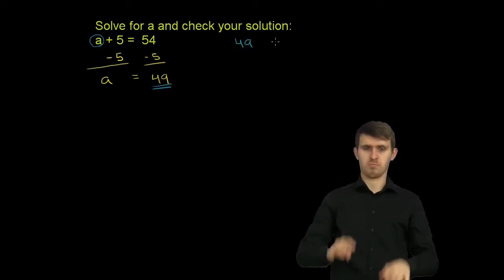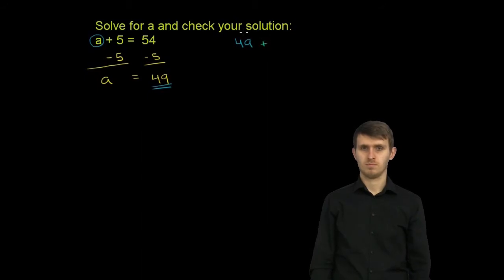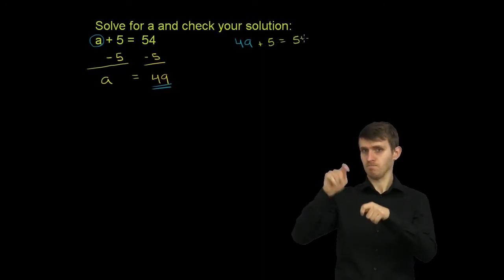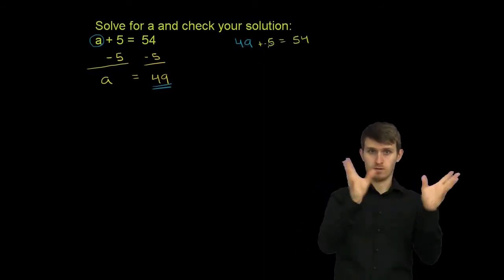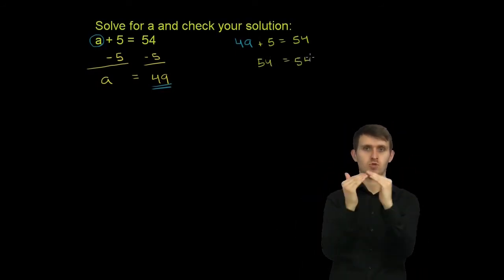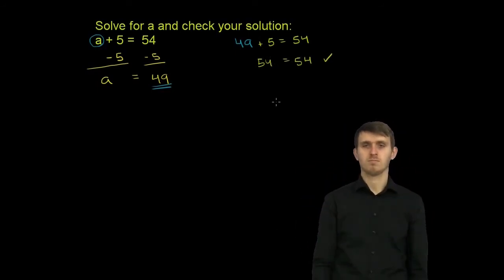49 plus, let me do that in that same shade of green, 49 plus 5 is equal to 54. We're trying to check this. 49 plus 5 is 54, and that indeed is equal to 54. So it all checks out.